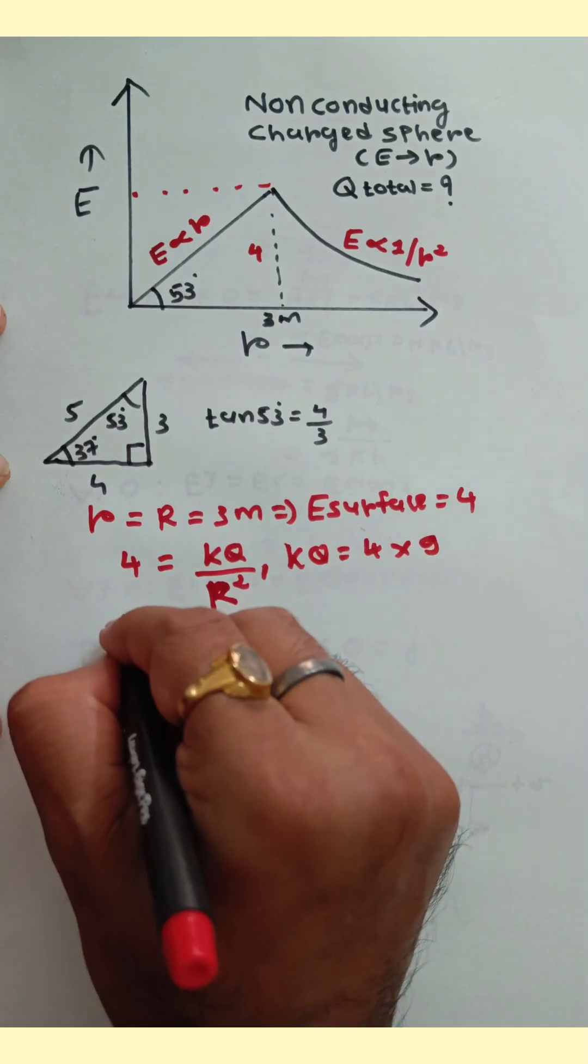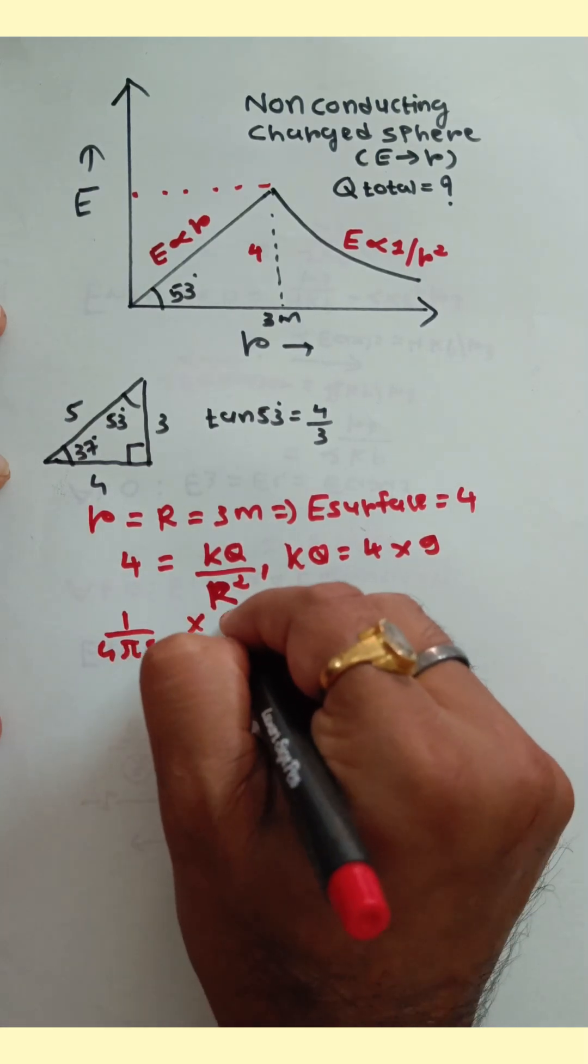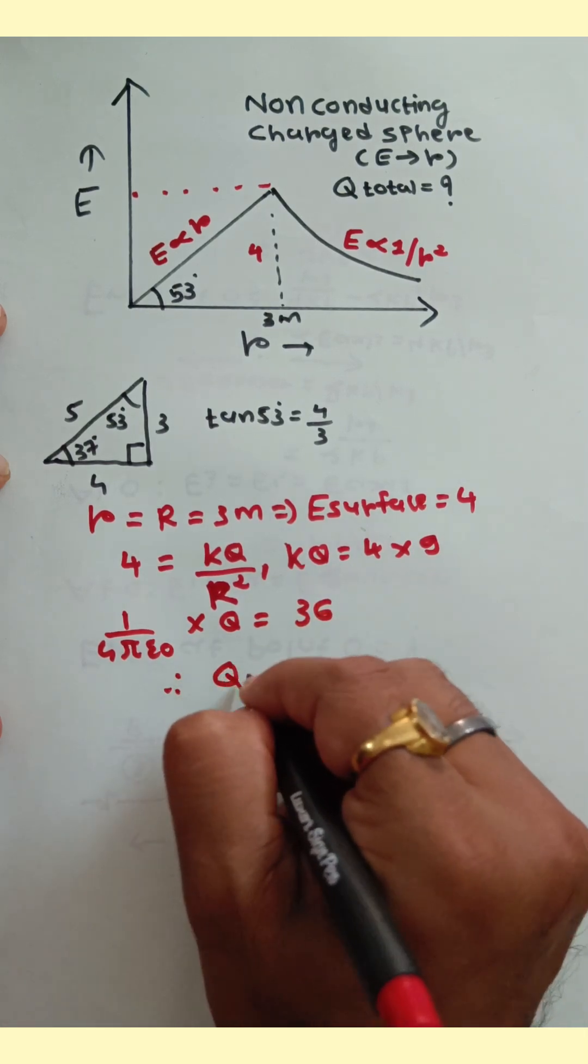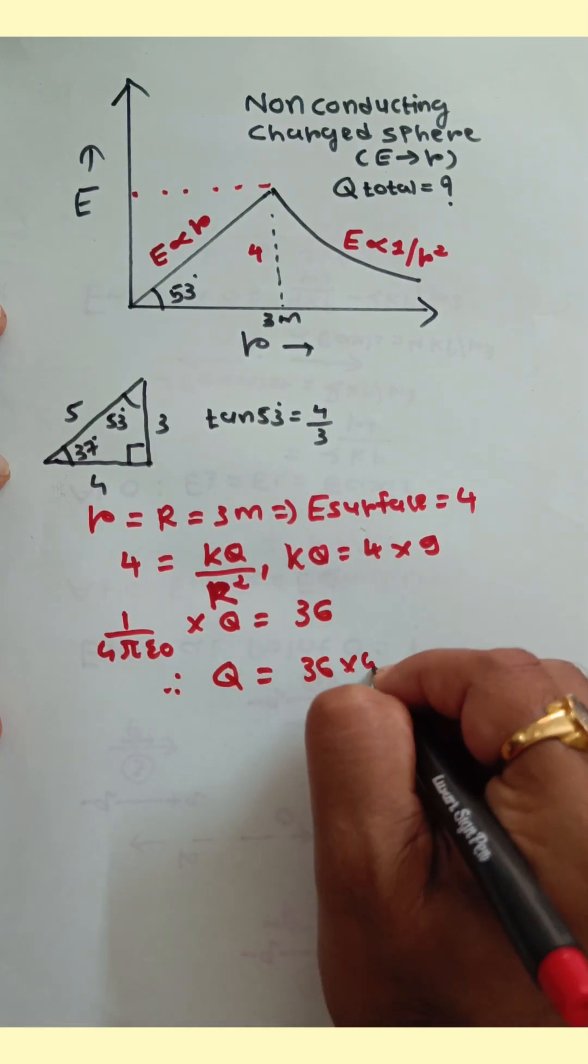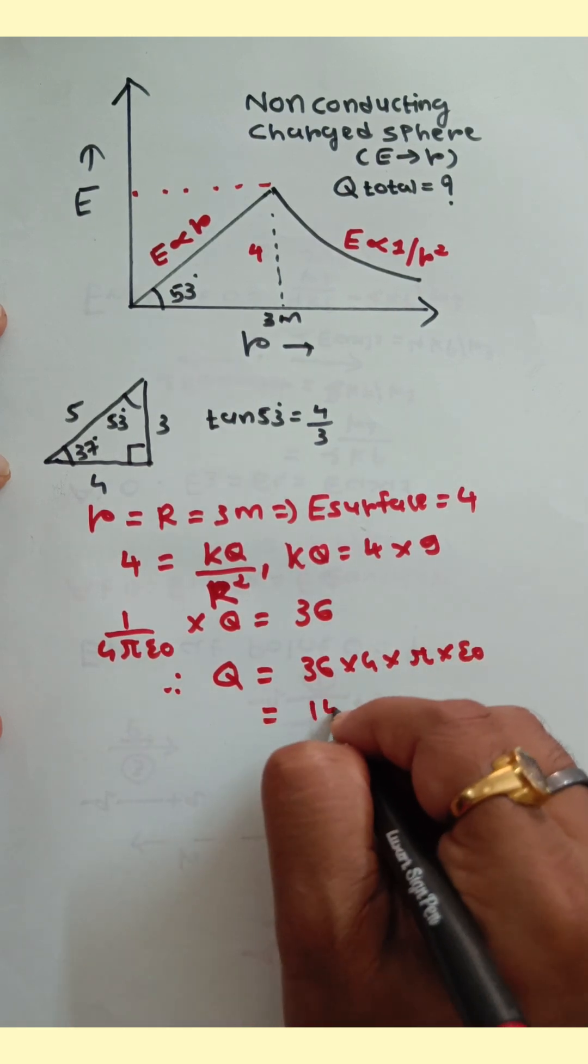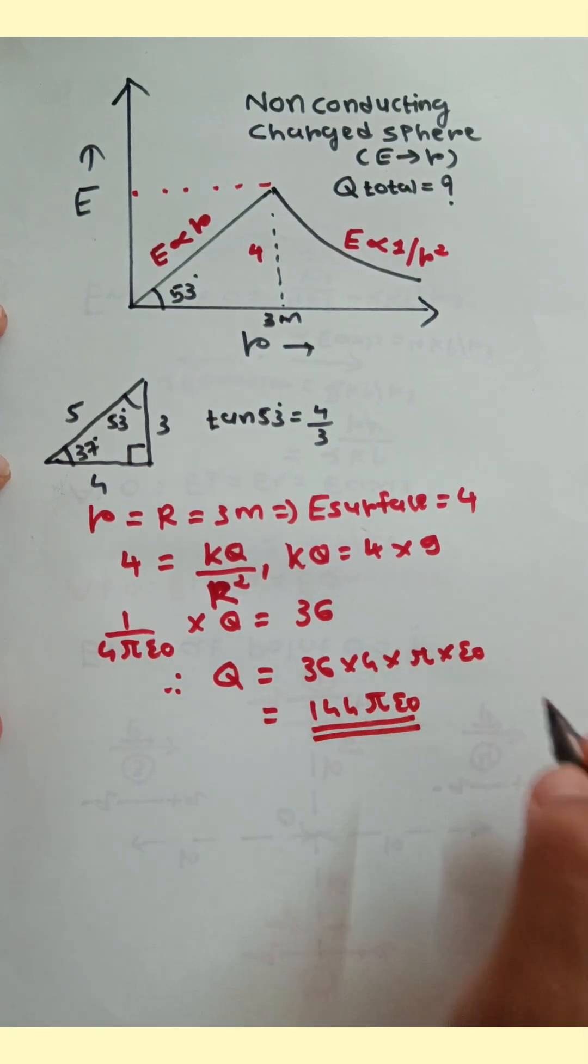So 3 square is 9. k is 1 upon 4 pi epsilon 0, and q is equal to 36. So total charge inside the non-conducting sphere is 36 into 4 into pi into epsilon 0. So the answer is 144 pi epsilon 0. Thank you.